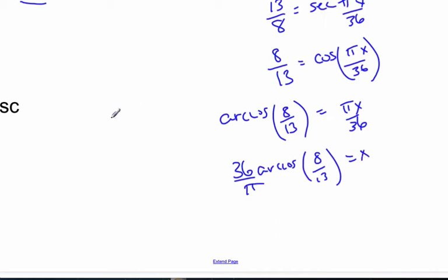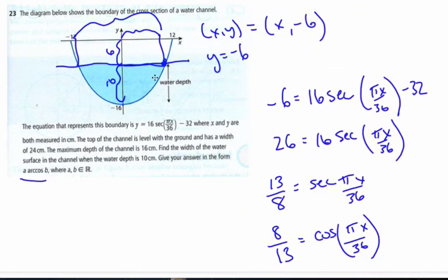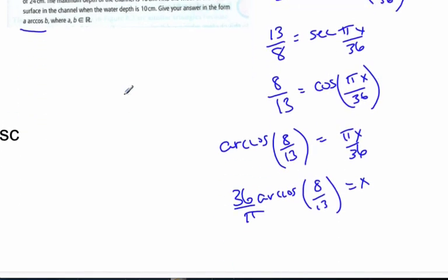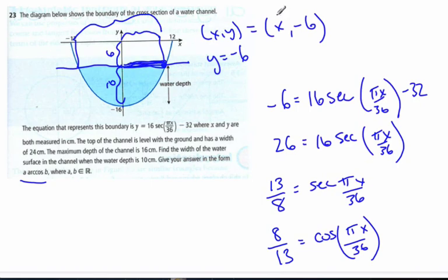So this distance is 36 over pi arc cosine 8 over 13. That's the distance to the point of intersection.